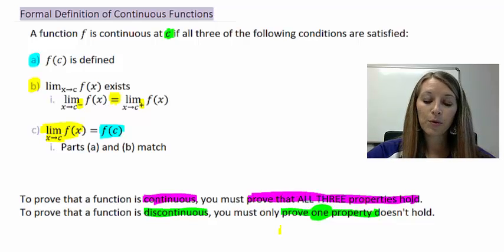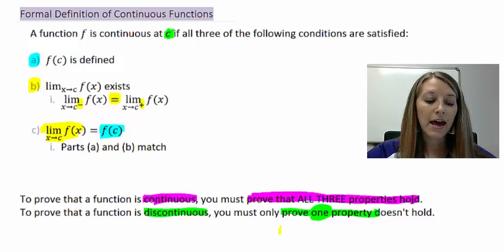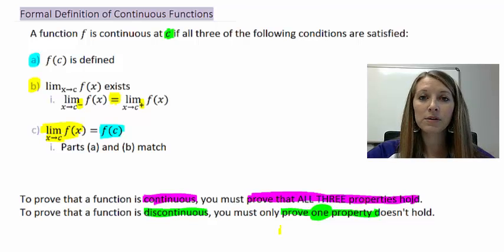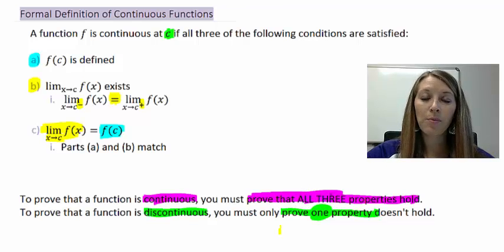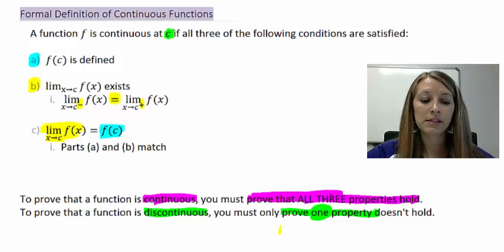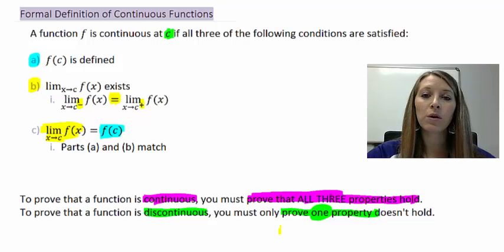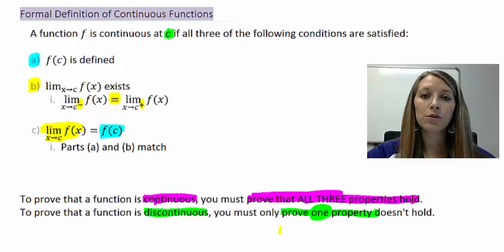But if we are trying to show that a function is continuous, we must prove that all three properties hold. Sometimes it is easy to prove that all three properties hold, and sometimes we have to work for it. The easiest examples are actually the most difficult to see, because all three properties will be worked in the exact same way. I want to emphasize what each property means individually before we put all three together into our formal definition of a continuous function.